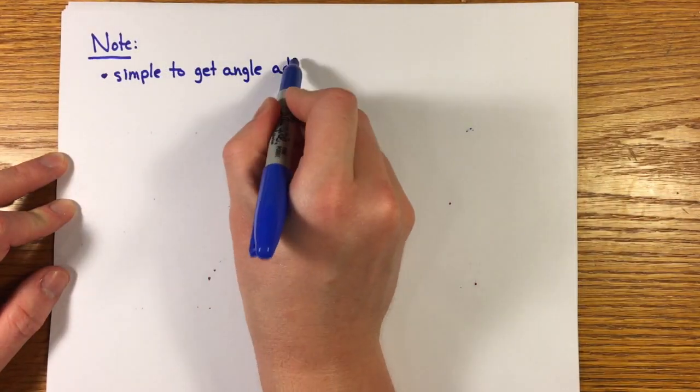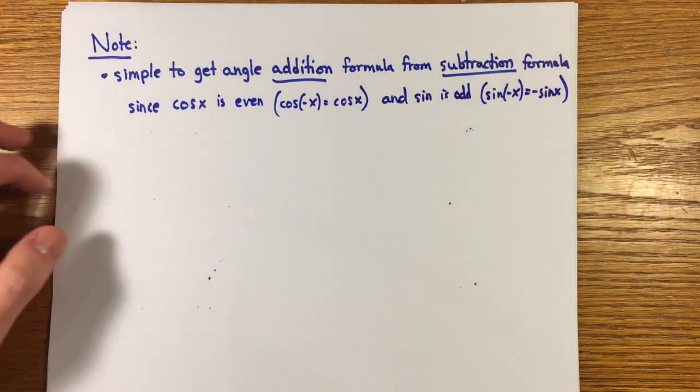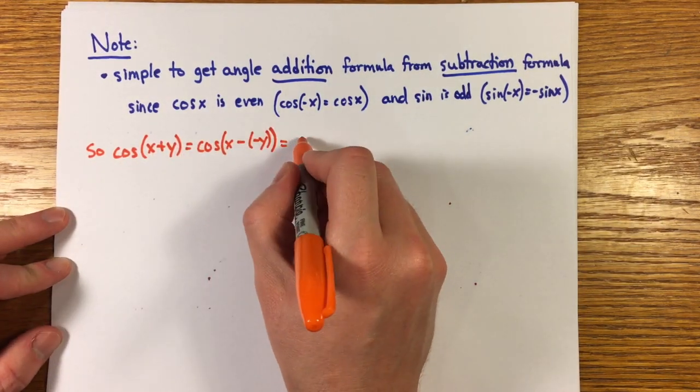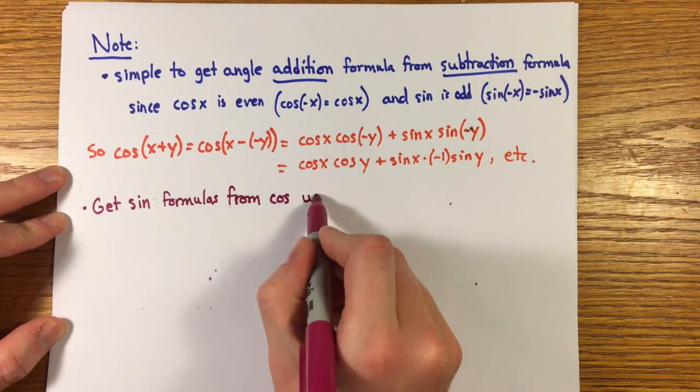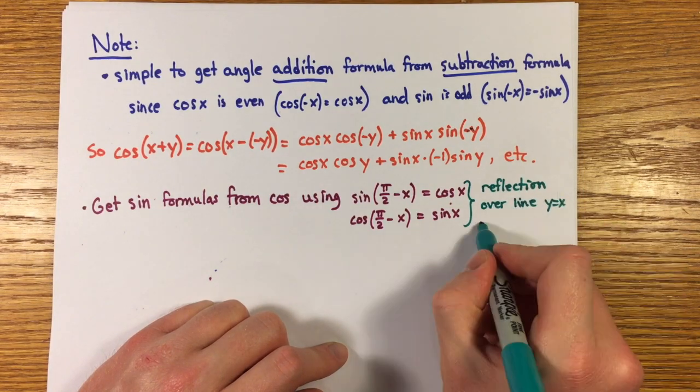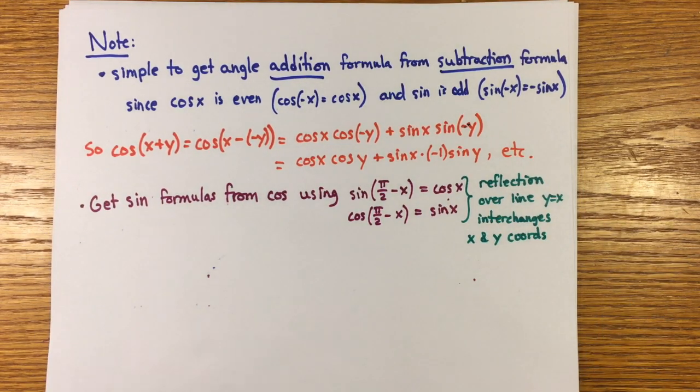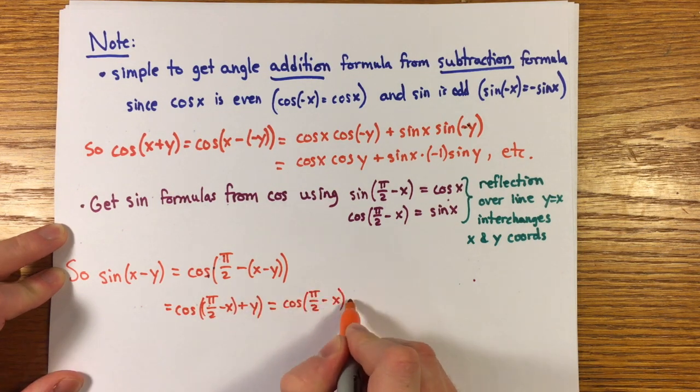So you have the difference formula for cosine, but I'll note that you immediately get the angle addition formula since cosine is even and sine is odd. And then to get the formulas for the sine, you use that the sine and cosine are reflections of each other over the line y=x. So sin(π/2 - x) = cos x and cos(π/2 - x) = sin x.